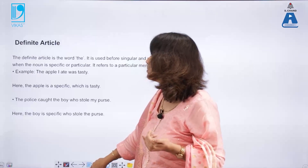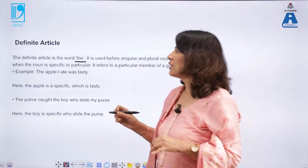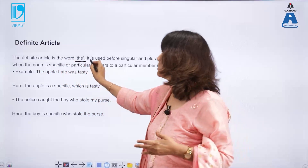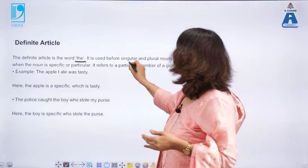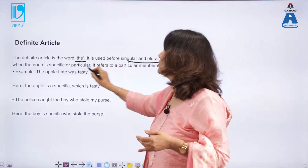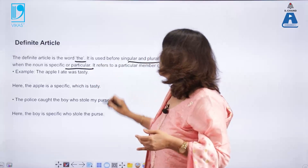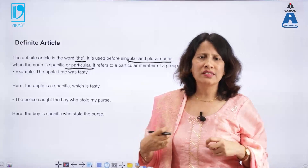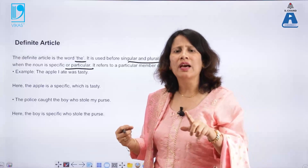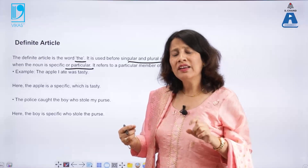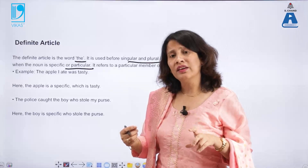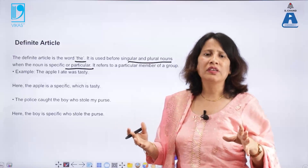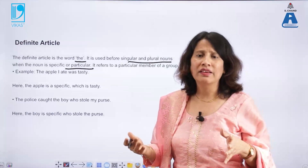The definite article 'the' is used before singular and plural nouns when the noun is specific or particular. For example, 'The apple I ate was tasty' specifies a particular apple. Compare this with 'An apple a day keeps the doctor away,' where 'an apple' refers to any apple — so we must understand the difference in usage.